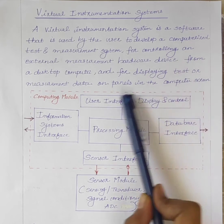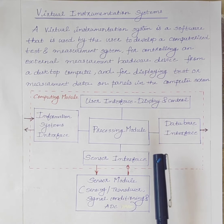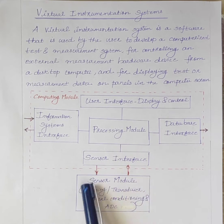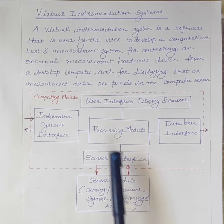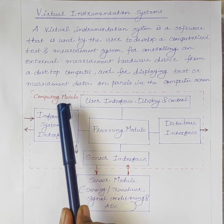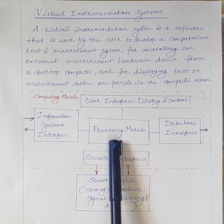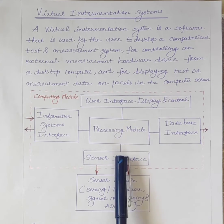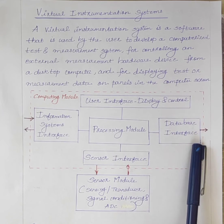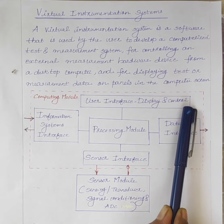The block diagram of virtual instrumentation system is shown here. It mainly consists of a sensing module and computing module. The computing module consists of an information system interface, processing module, sensor interface, database interface, user interface, display and control.